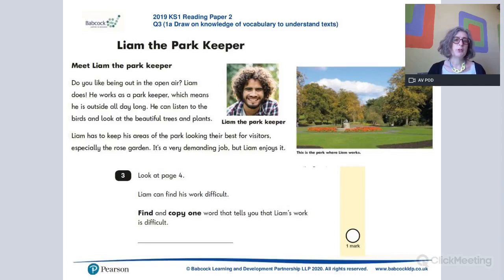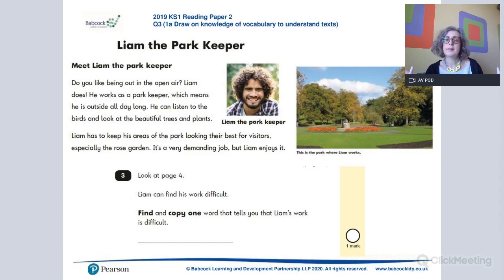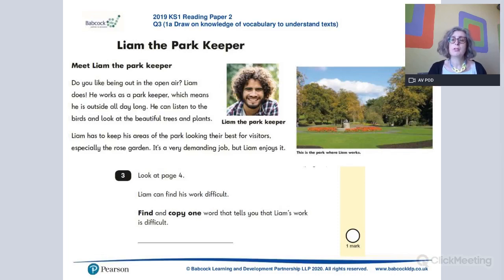If you didn't know what 'demanding' meant, how could you work it out? Well, the majority of the paragraph leads you to thinking that Liam really enjoys his job — he's outside with the birds, trees, and plants — but there's one really key word that helps you understand it's demanding, and that word is 'but.' In the last sentence: 'It's a very demanding job, but Liam enjoys it.' That's frequently the case when we're trying to clarify words we don't know — we have to infer from the conjunction 'but' that those two clauses are in opposition, so 'demanding' is the opposite of enjoying it, and that's how we get to 'difficult.' So if we analyse how children have coped with those questions in our school or setting, we can get a really good understanding of which aspects of vocabulary we might need to develop.